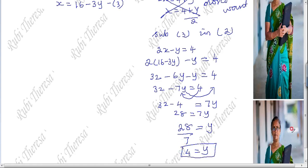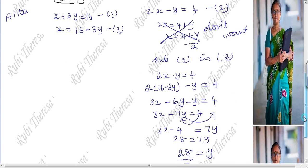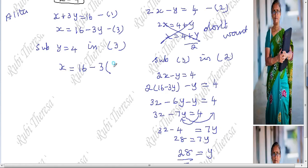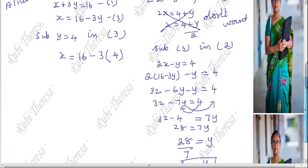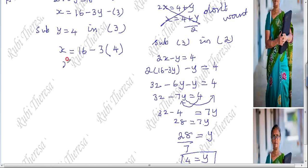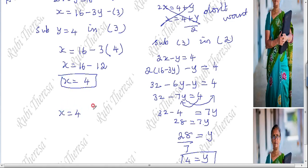Y equal to 4. So substitute Y equal to 4 in equation 3: X equal to 16 minus 3 into 4. In the place of Y, write 4 because Y equal to 4. So X equal to 16 minus 12. 3 fours are 12. So 16 minus 12 is 4. X equal to 4. And Y equal to 4.